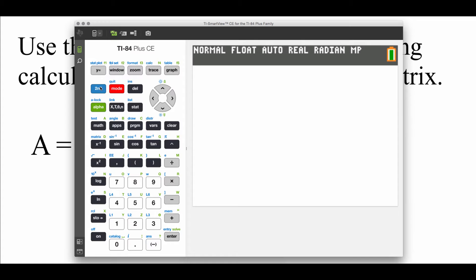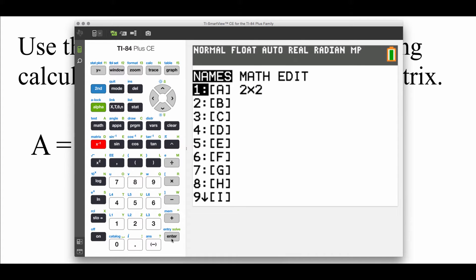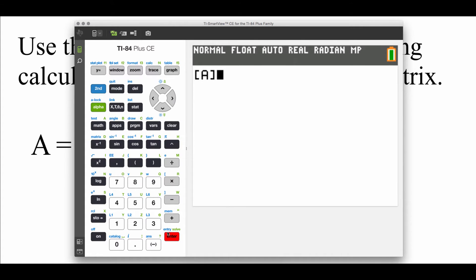Now we want to find the inverse matrix. So let's go into our matrix capabilities and we'll grab matrix A. Now there is an inverse button on your calculator right here, that X with a negative one. Let's just hit that one, hit enter. There's the inverse of our matrix.